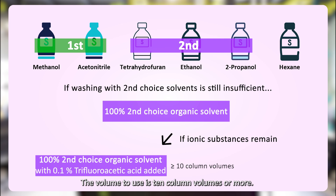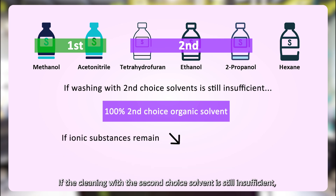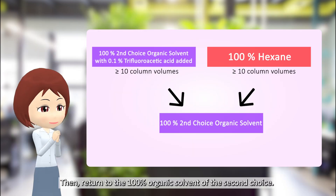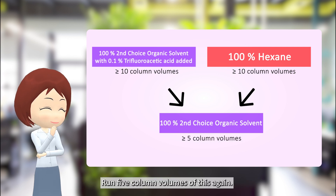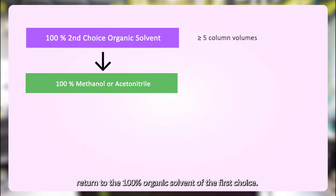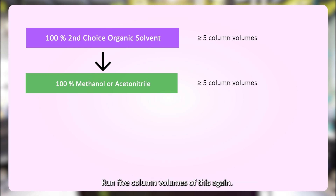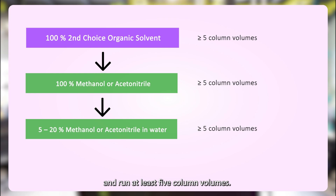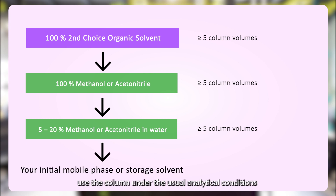Use 10 column volumes or more of this solution. If highly hydrophobic substances remain in the column, use hexane as the final choice, also with 10 column volumes or more. Then return to the 100% organic solvent of the second choice and run 5 column volumes again. Finally, return to the mixture of organic solvent and water and run at least 5 column volumes. After that, use the column under usual analytical conditions and check whether the column has recovered or not.